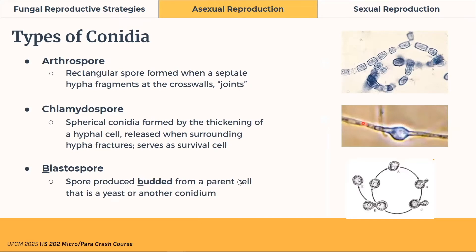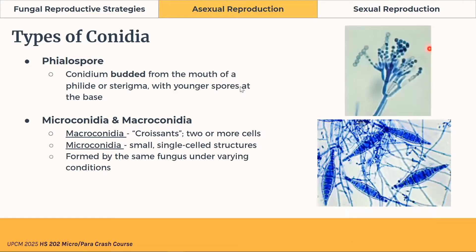There are five types of conidia. First, the arthrospore — it looks like fingers made up of joints. Second, the chlamydospore — it's spherical, budding out of thickening of a hyphal cell. Third, the blastospore — it's produced by budding from a parent cell, appearing round. Fourth, the phialospore — it arises from a vase-shaped structure called the phialide or sterigma, where younger spores are at the base compared to those at the top.